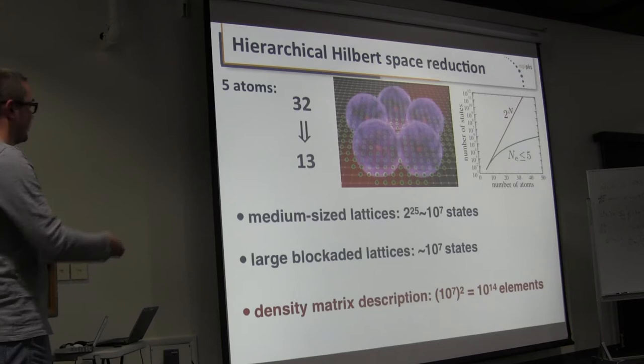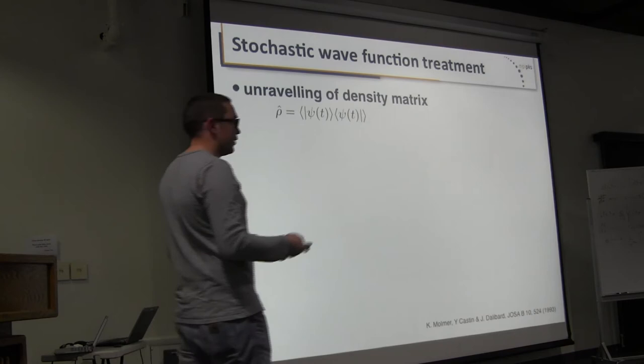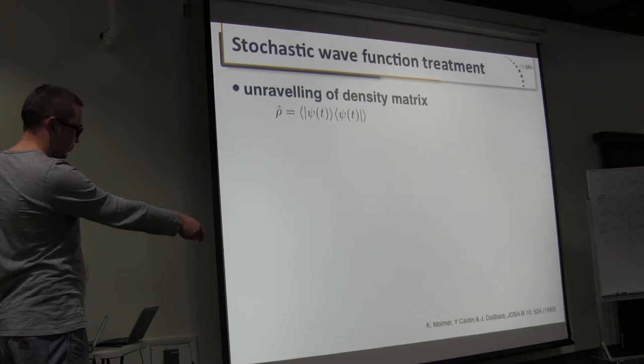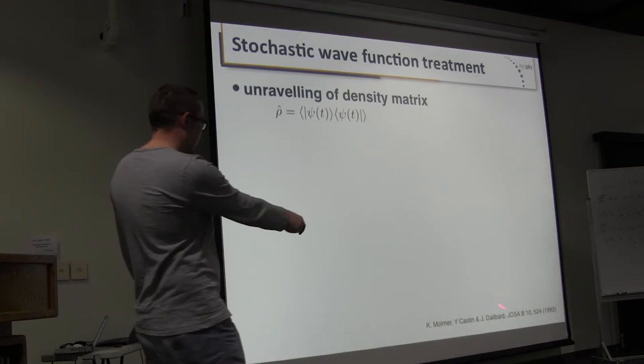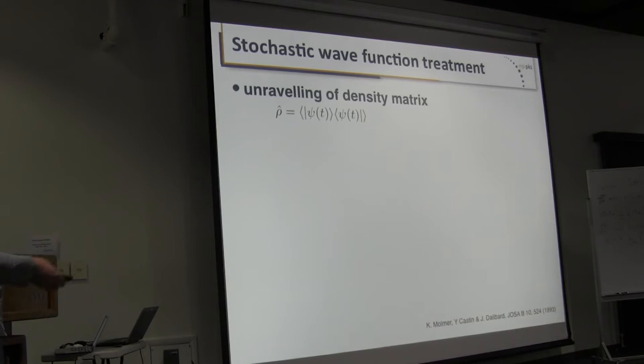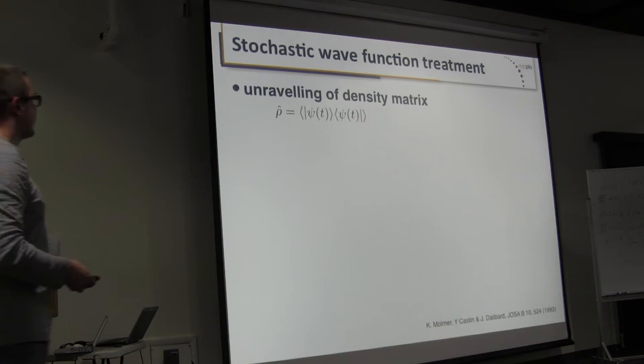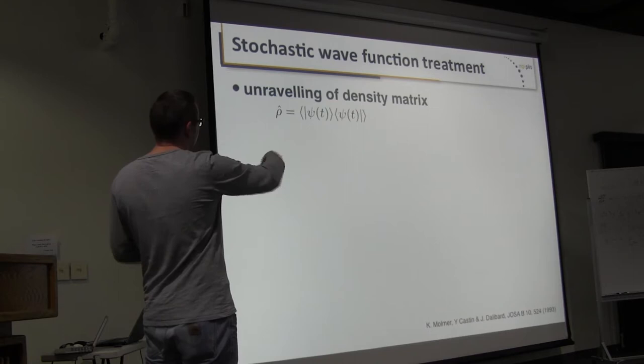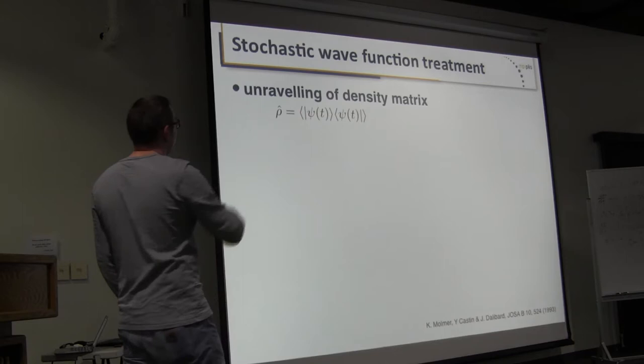One shouldn't even try the full density matrix description for more than a couple of particles, but there is a nice way out that is quite frequently used. This is described by Mølmer and Dalibard from the early 1990s: the idea is to unravel the density matrix into stochastically evolving pure states undergoing an effective evolution, recovering the density matrix on average when you average over many trajectories.